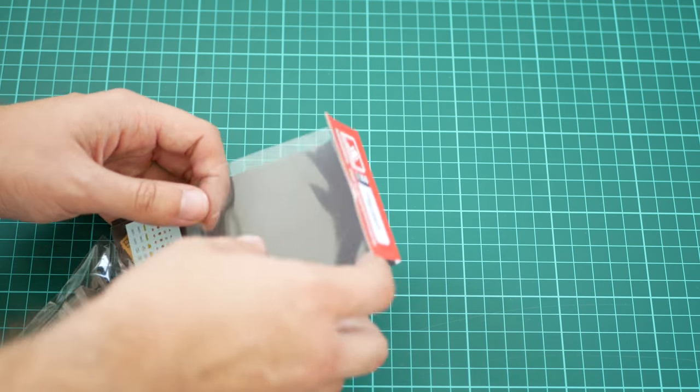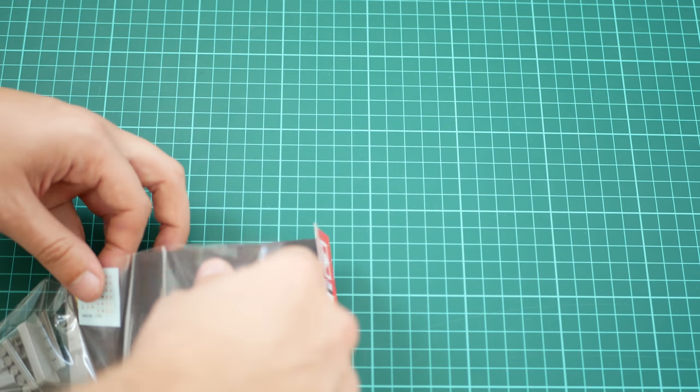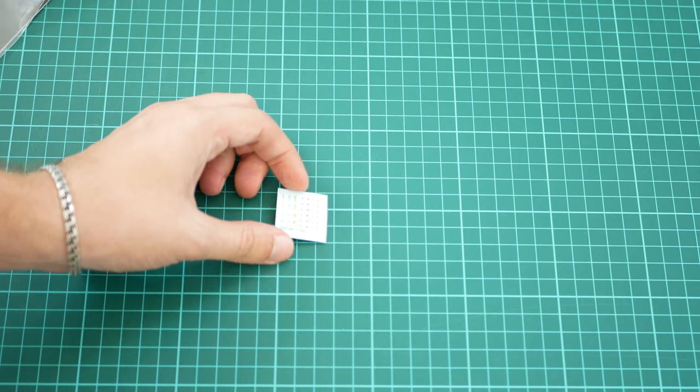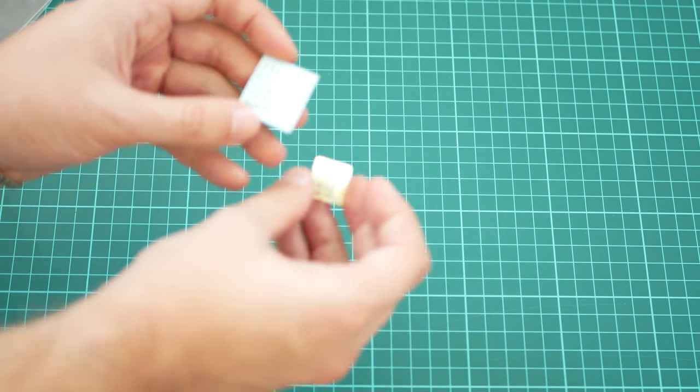It just shows the application method for these parts. Surprisingly, even though this is a 1:44 scale vehicle, we still have this small decals sheet and also a small PE fret.